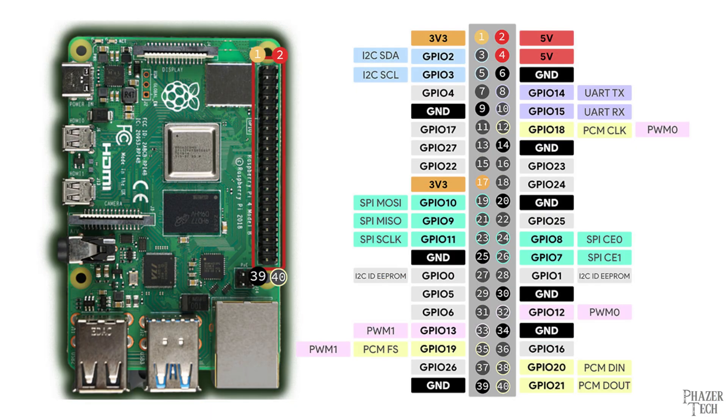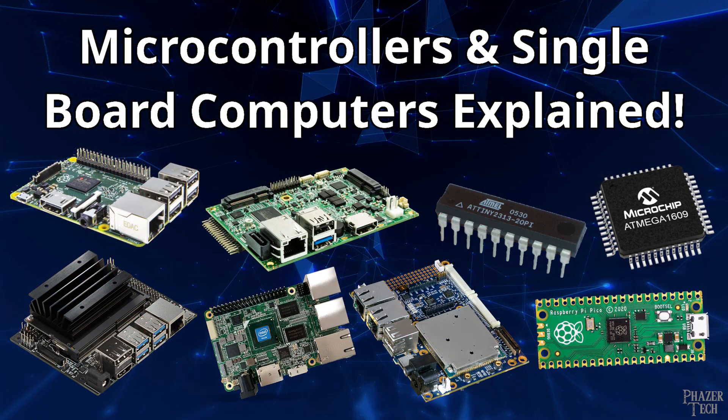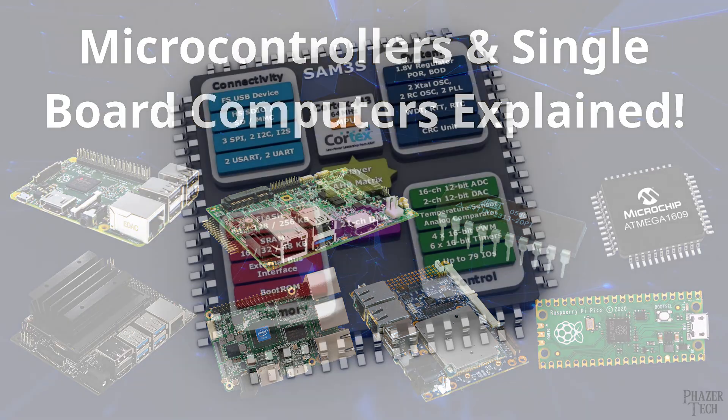Let's jump straight into it and talk about the peripherals and communication protocols that are supported by the Raspberry Pi's GPIO header. The Raspberry Pi and SBCs in general are unique because they basically bridge the gap between a desktop or laptop PC and a microcontroller, or MCU for short.